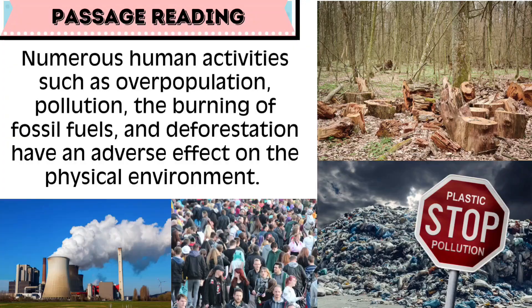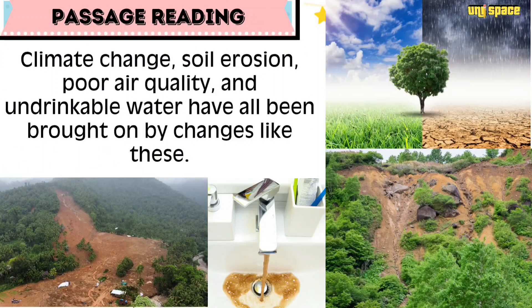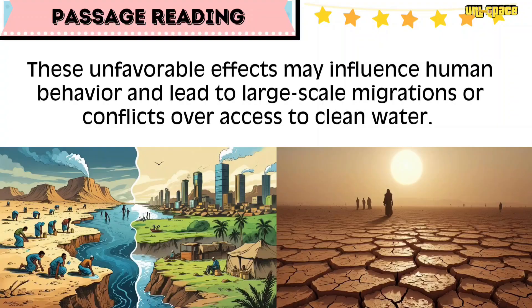Numerous human activities such as overpopulation, pollution, the burning of fossil fuels, and deforestation have an adverse effect on the physical environment. Climate change, soil erosion, poor air quality, and undrinkable water have all been brought on by changes like this. These unfavorable effects may influence human behavior and lead to large-scale migrations or conflicts over access to clean water.